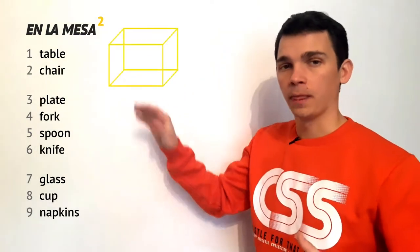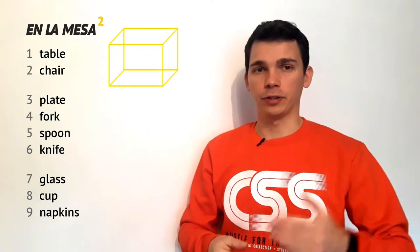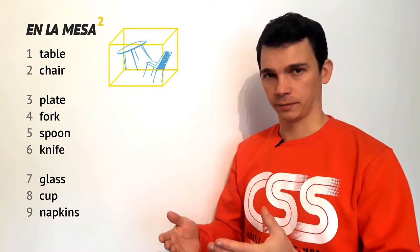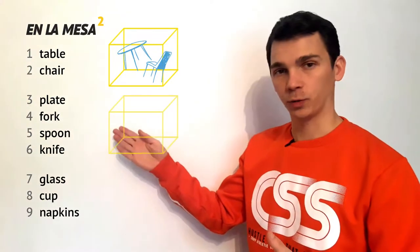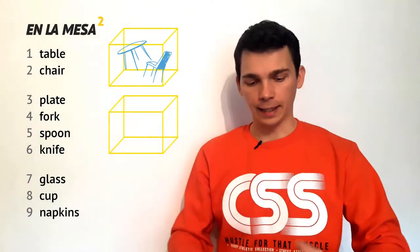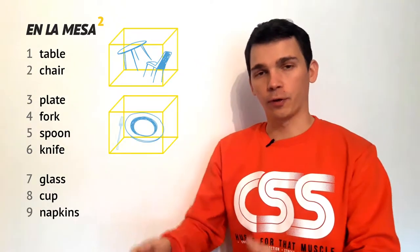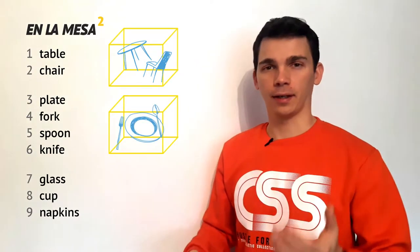The first sub-block: you come in and you see the table and a chair. Then second one, you come to the table and on it you see a plate, a fork, spoon and knife.